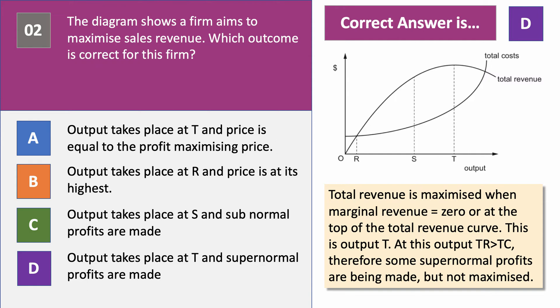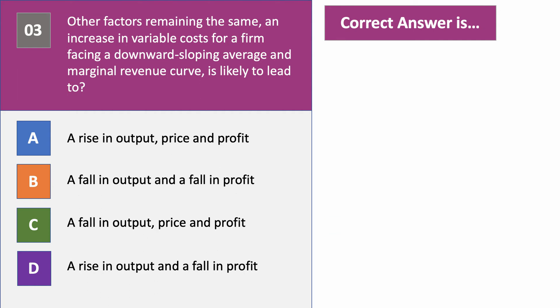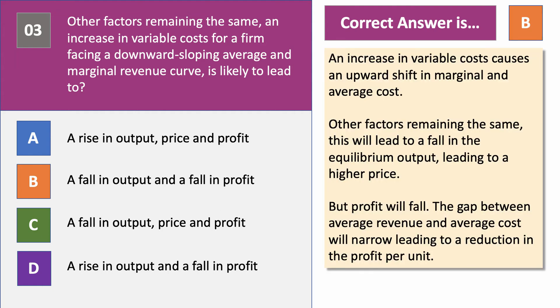Question three: other factors remaining the same, an increase in variable costs for a business that faces a downward-sloping demand curve and marginal revenue curve is likely to lead to what? Take a moment to check out the options A, B, C, and D. The correct answer is B.